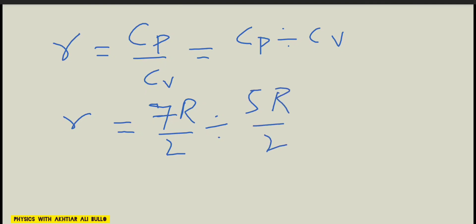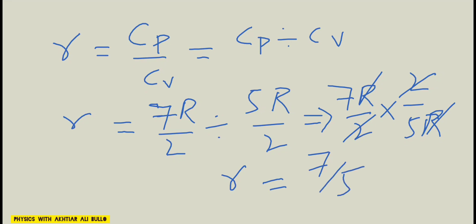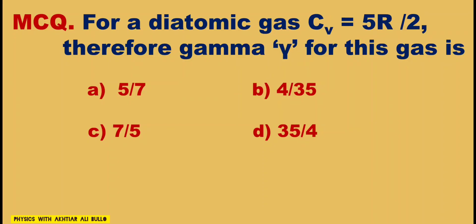Now, by changing division to multiplication, it will become 7R upon 2 into 2 upon 5R. Gamma will be obtained as 7 upon 5. So the correct option is C, 7 upon 5.